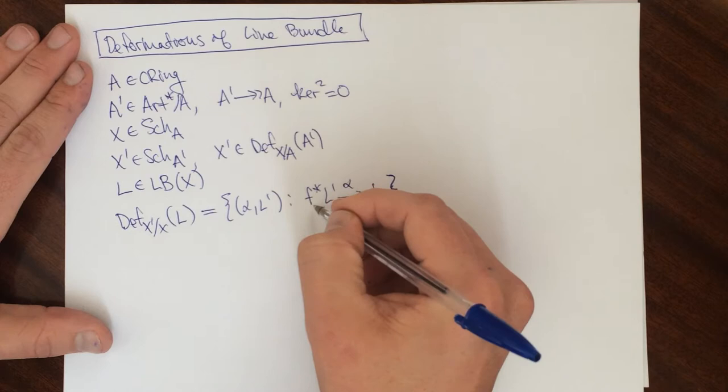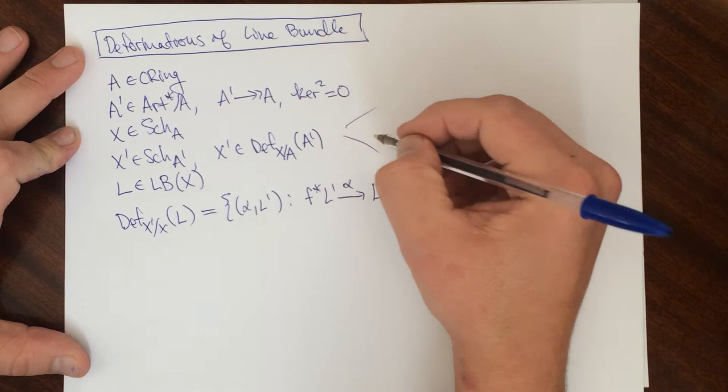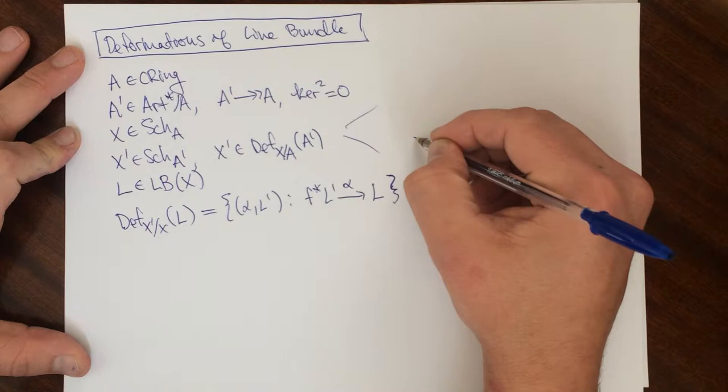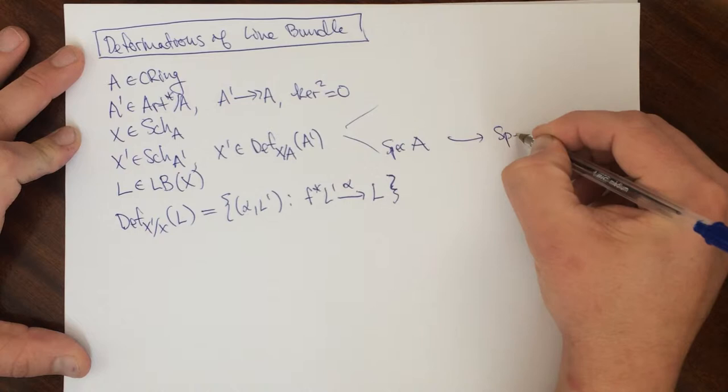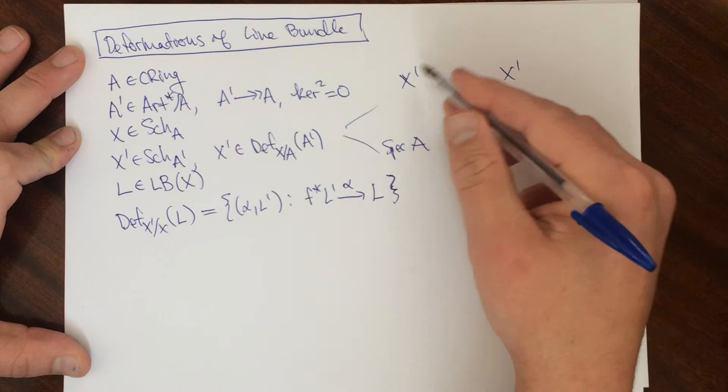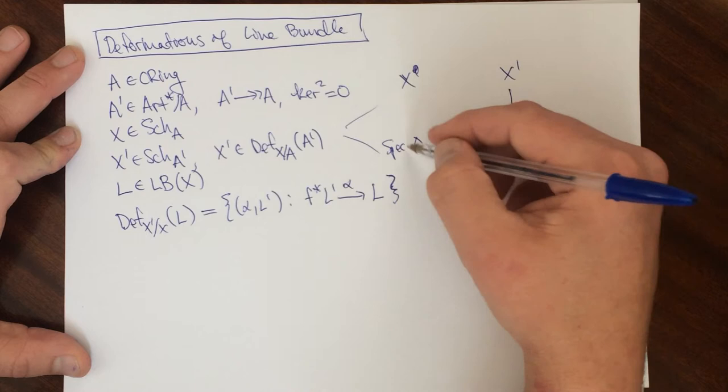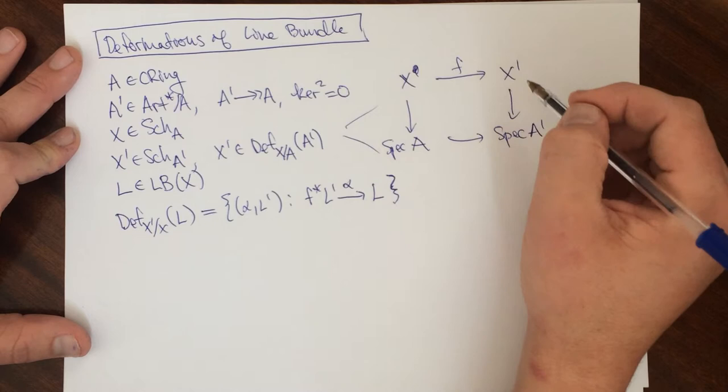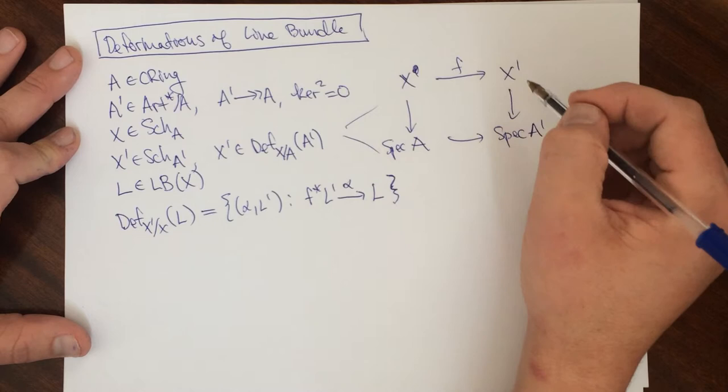I need to say what F star is. F star here is, so we have this deformation of X over A, and so given a deformation, what was the deformation? So we had A, we had spec A here, and we had a closed immersion into spec A prime, and here we had X prime, and the idea was that we had a base change so that X could be obtained by base changing via this map here. So we're given this map, we're given F, and this F allows us to identify X with the base change of X prime to A.